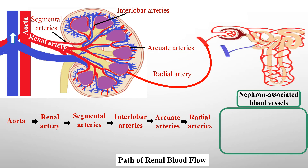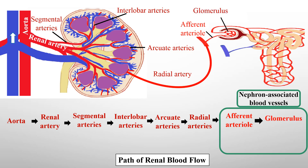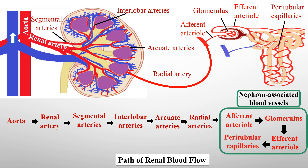Each radial artery further divides to form the afferent arteriole that enters the nephron. The afferent arteriole forms the first capillary bed called the glomerulus. The glomerulus gives rise to the efferent arteriole, and the efferent arteriole divides to form a second capillary bed called the peritubular capillaries.